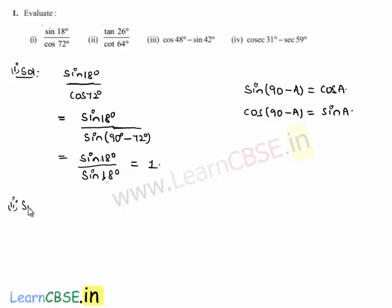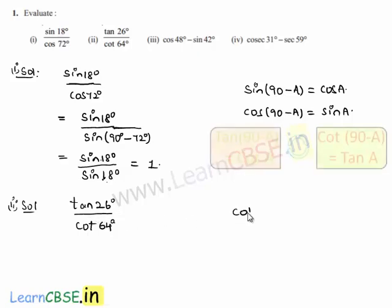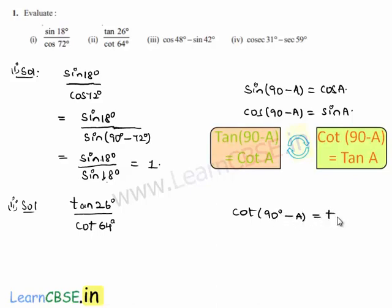Now moving on to the second bit: the given expression is tan 26 degrees by cot 64 degrees. To solve this, let us convert both numerator and denominator into a single trigonometric ratio — in terms of tan. We have cot of 90 degrees minus A is equal to tan A, and tan of 90 degrees minus A is equal to cot A.